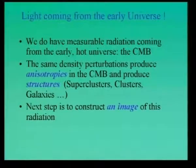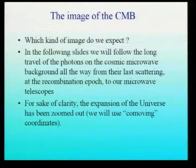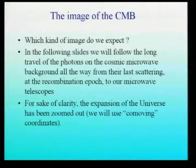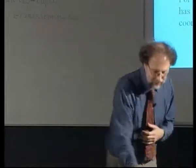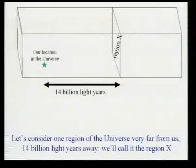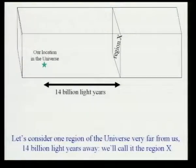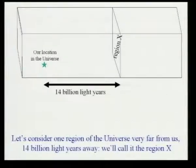Constructing an image of the cosmic microwave background has been a challenge for experimenters for more than 20 years. Let's see which kind of image we expect. Consider a photon starting at the recombination epoch and traveling 14 billion light years until it hits our detector. Take two regions: our current location and a location 14 billion light years away. For clarity, the expansion of the universe is not shown in these slides.